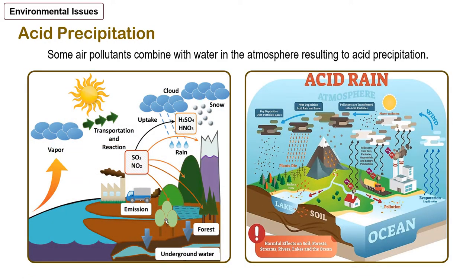Recall that in the global water cycle, water enters the atmosphere as vapor and returns to Earth's surface in the form of precipitation such as rain or snow. Some air pollutants combine with water in the atmosphere and form acids — the result is precipitation that is acidic, or acid precipitation. Because organisms are adapted to the normal pH range of their environment, increased acidity of soil and water causes disease or death to plants and animals, not to mention property damage caused by acidic rain.